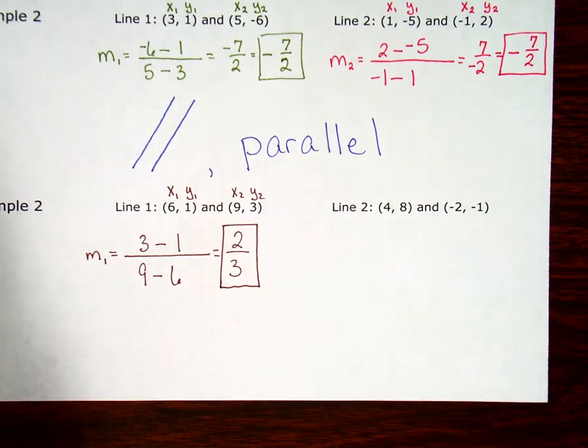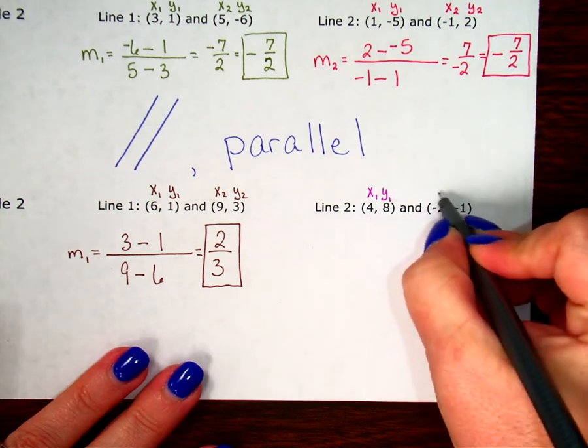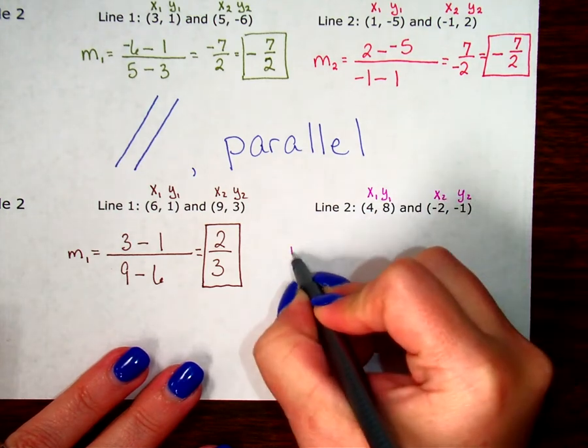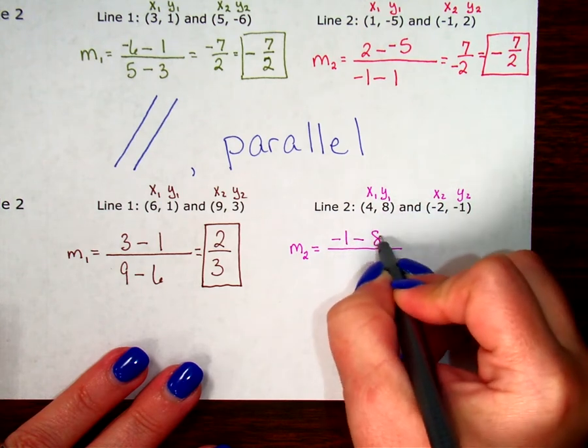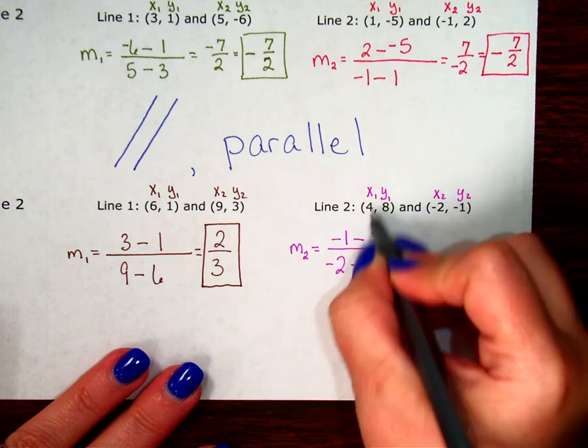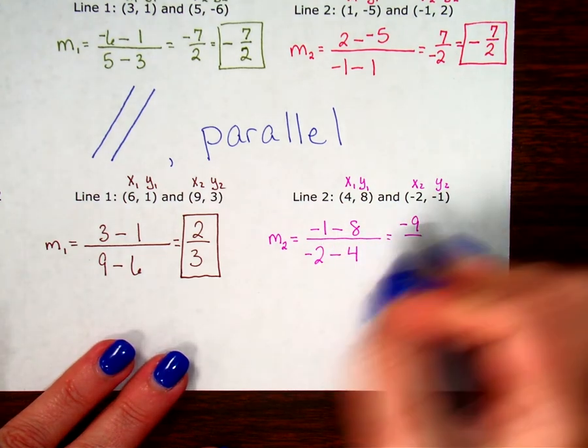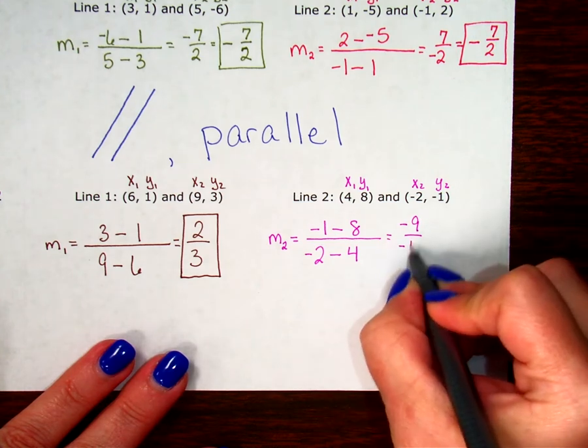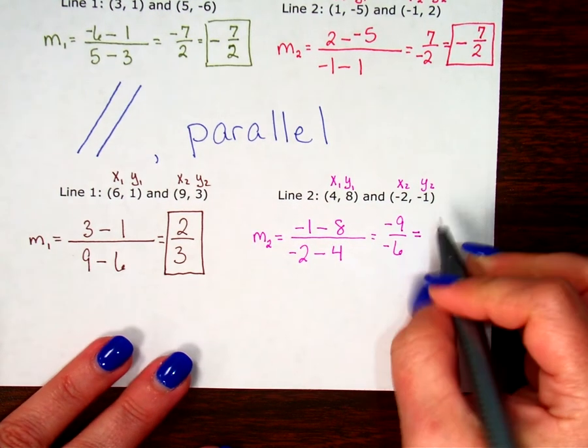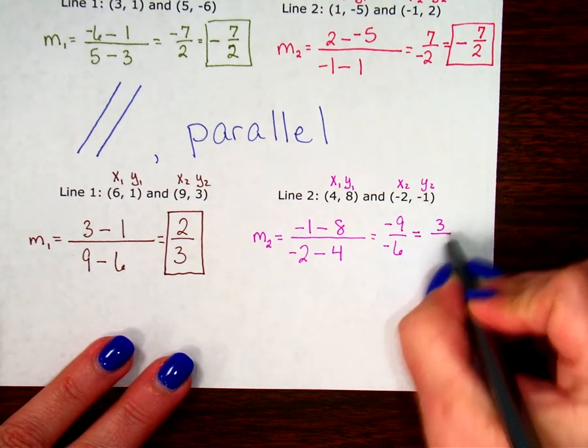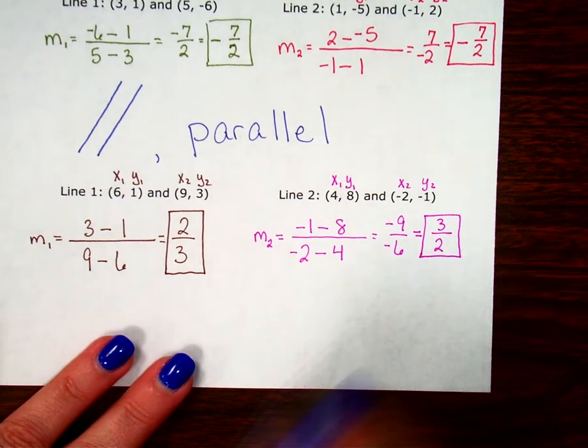Then let's go to the next one. Label my points for line 2, x1, y1, x2, y2. Slope of line 2 equals, start with my second y, negative 1 minus 8. Then my x2, negative 2 minus 4. Negative 1 minus 8 is negative 9. Negative 2 minus 4 is negative 6. Negative over negative is a positive. 9 over 6. They're both divisible by 3. 3 goes into 9 three times. 3 goes into 6 two times. Remember, negative over negative cancels to a positive. So, it's positive 3 over 2.